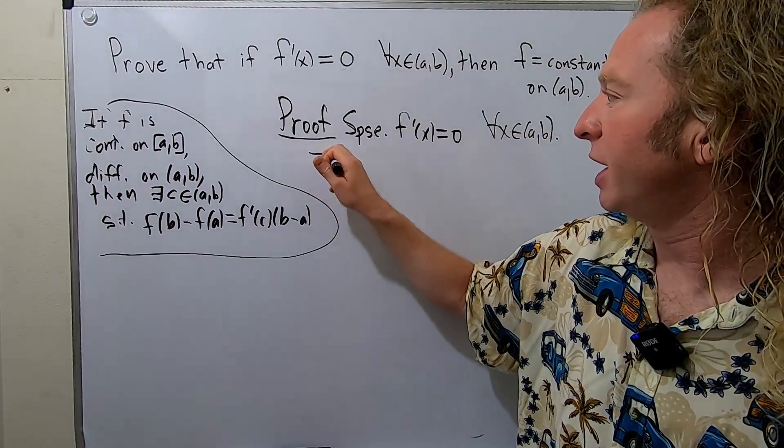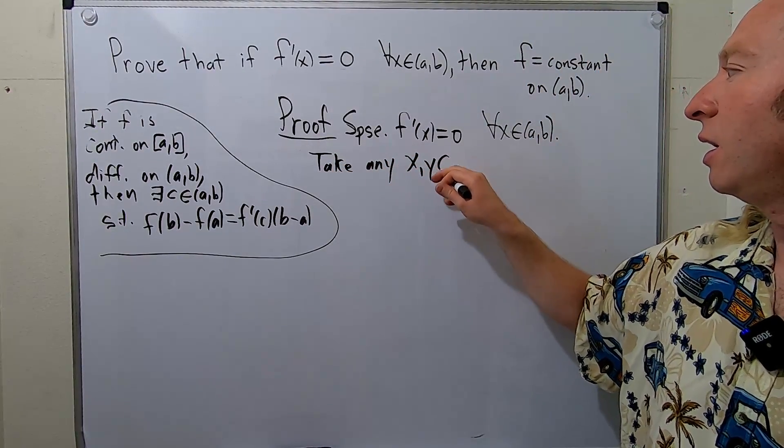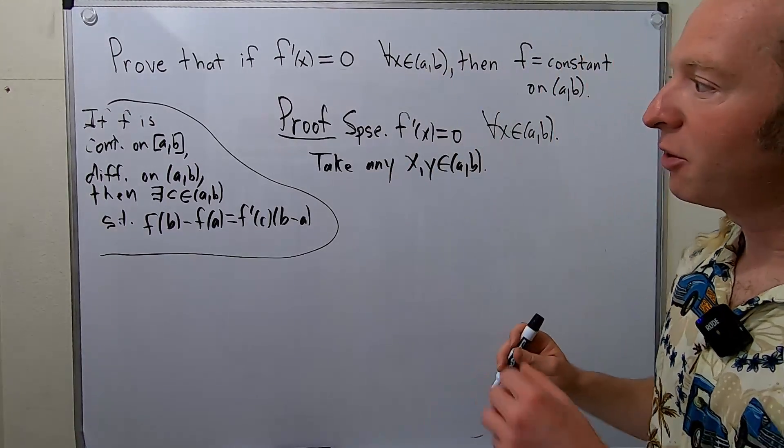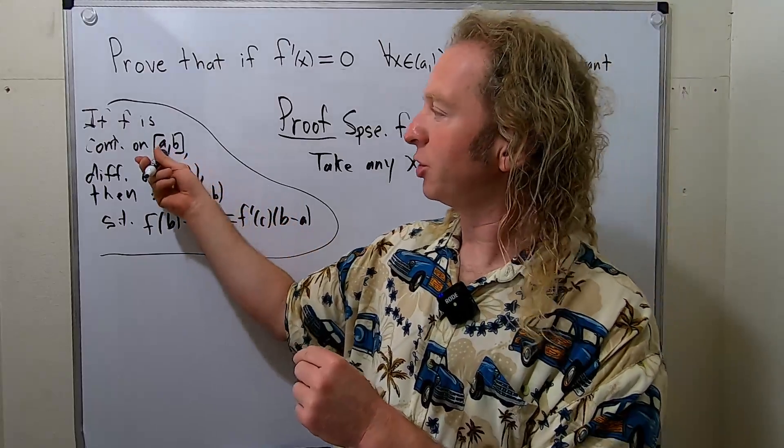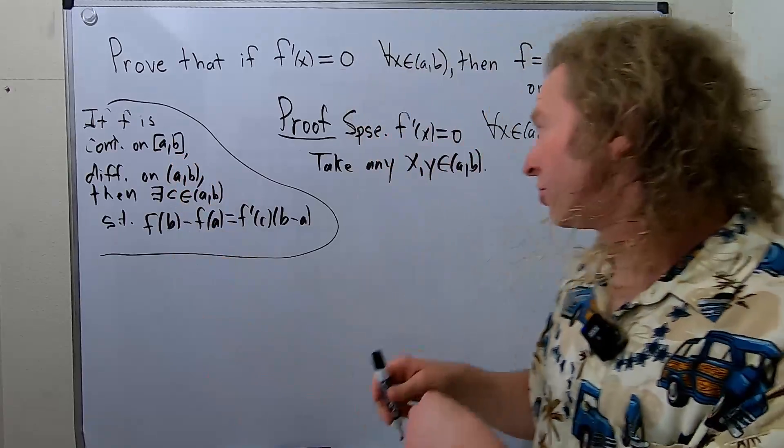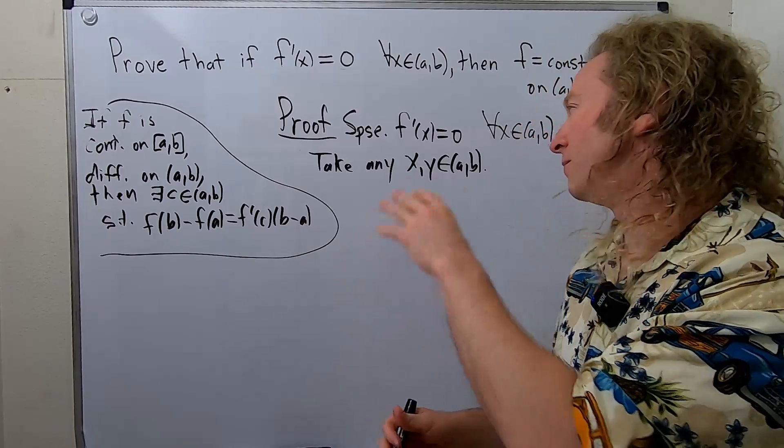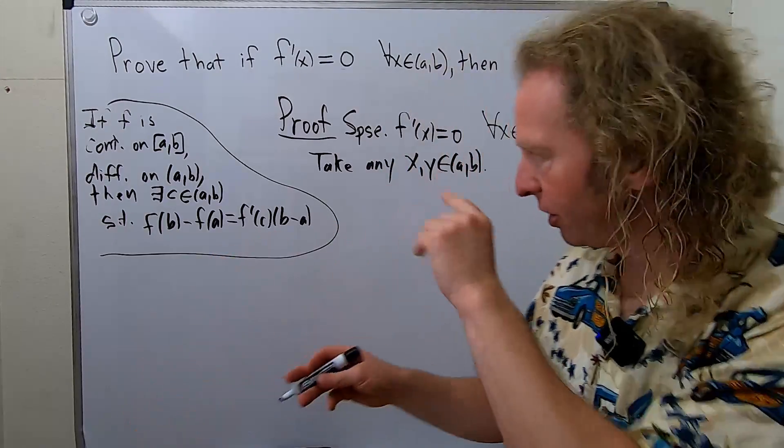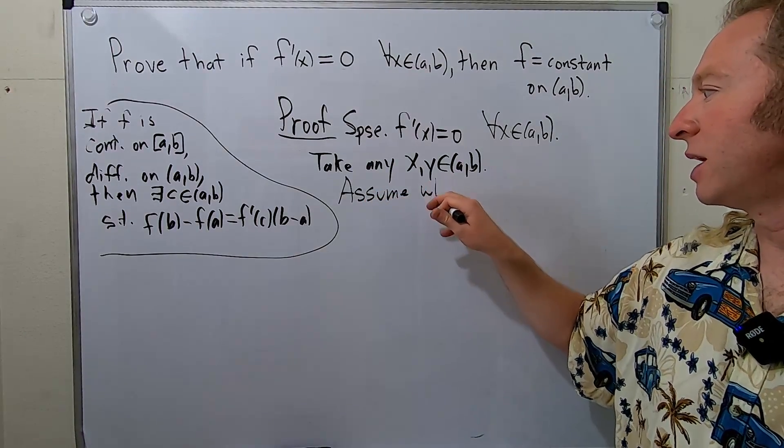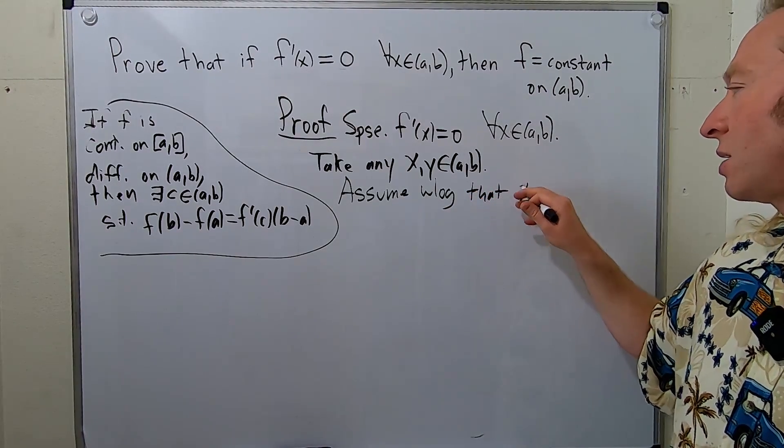So what we'll do is we'll take any, and I'll use x and y. So take any x and y in the open interval (a,b). And the goal is to show that f(x) is equal to f(y). Now, in order to use the mean value theorem, you have to know which one is smaller, right? Because you can't write [a,b] if a is bigger than b. A has to be less than b here. So I'm going to assume that x is less than y. However, you could do the same argument and say x is bigger than y. You can consider a similar interval. So assume, without loss of generality, that means that a similar argument can be done, that x is less than y.